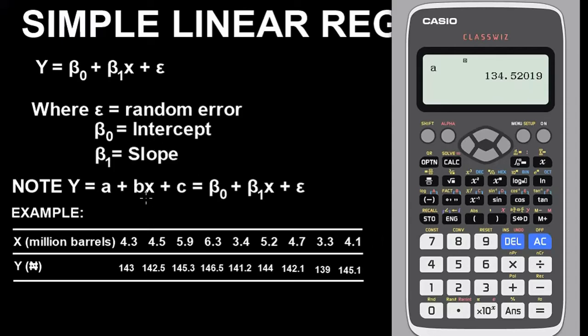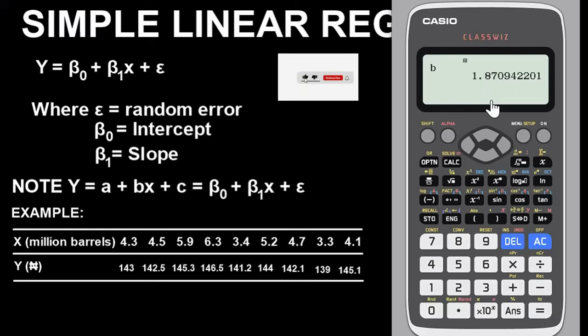To find the value for your b, which is the same thing as β₁, that's our slope, press AC button, go back to Option, go down to Regression. For b, press 2 and press equals. The value is 1.87094201. That's the value for β₁ or b, which is the slope.